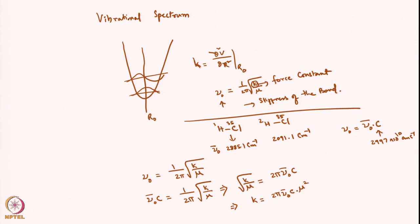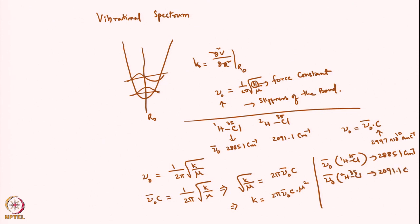I already know μ_naught_bar: for H¹Cl³⁵ it is 2885.1 cm⁻¹ and for DCl³⁵ it is 2091.1 cm⁻¹.